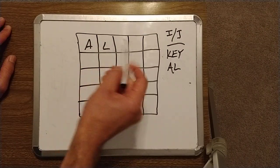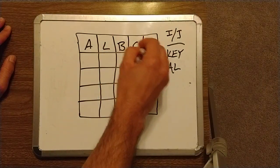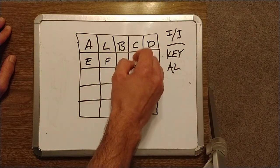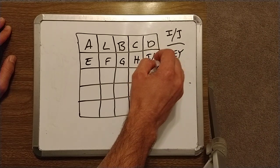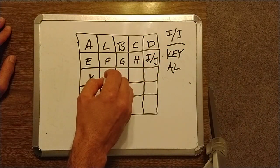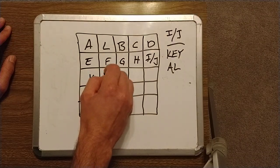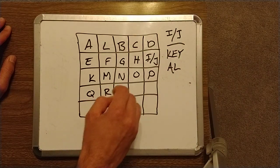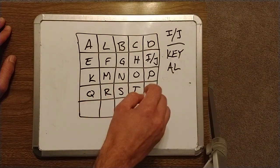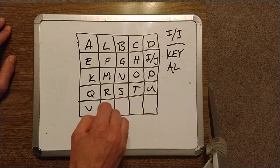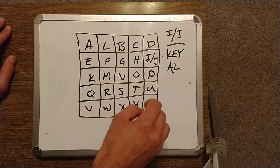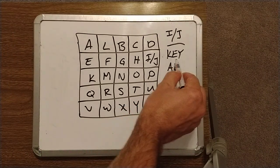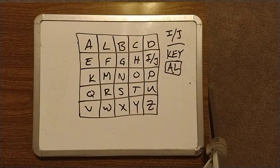Now, for the rest of the letters, we're going to follow in alphabetical order across this grid, remembering that I and J are in the same block. So that means A, this is our L, this will become B, C, D, E, F, G, H, I and J in the same block, K, here's our L, this becomes M, N, O, P, Q, R, S, T, U, V, W, X, Y, and of course Z.